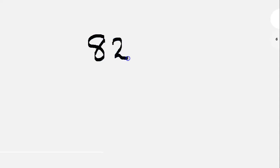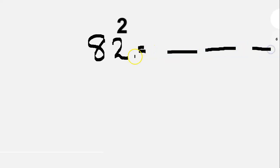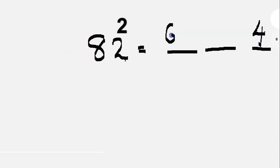Next question: 82 square. In the ones place, 2 square is 4. In the tens place, 8 square is 64.